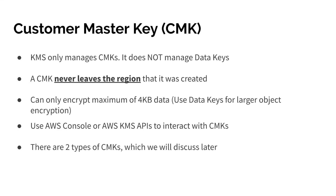CMKs are the only type of encryption key that KMS manages. They are stored in HSMs and never leave the region — in fact, they never leave the hardware security module itself. CMKs can only encrypt a maximum of four kilobytes of data. So if you want to encrypt hundreds of megabytes, you need to use something called data keys. Data keys are the second type of key, and they are generated from a particular CMK.